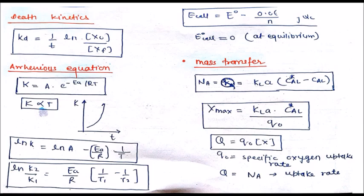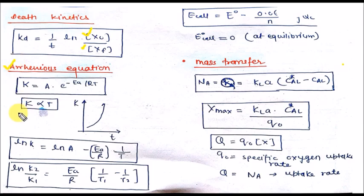Here is the formula of death kinetics. The death kinetics formula is similar to growth kinetics — the only difference is that X₀ is the higher concentration in the numerator and Xf final biomass concentration is in the denominator. This is the Arrhenius equation: you can calculate the rate constant by ln(k₂/k₁) equal to Ea/R times (1/T₁ minus 1/T₂).